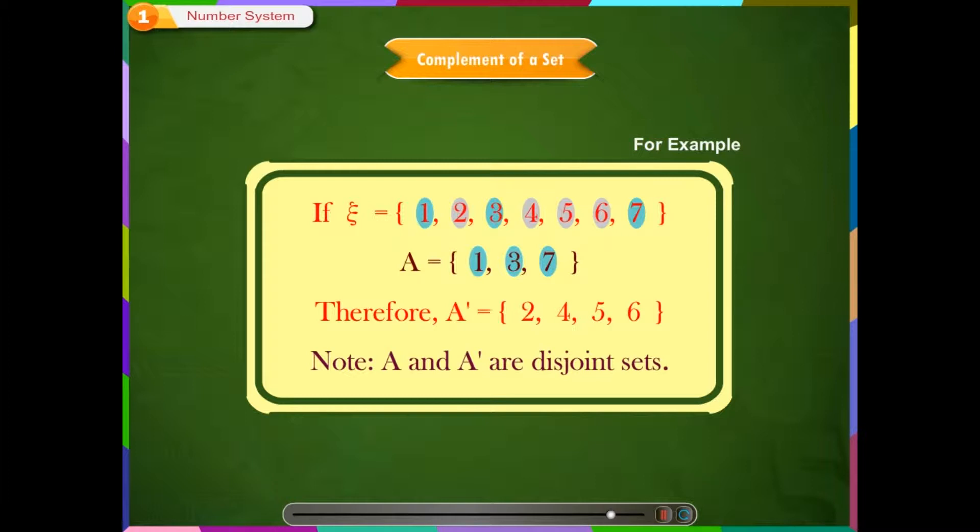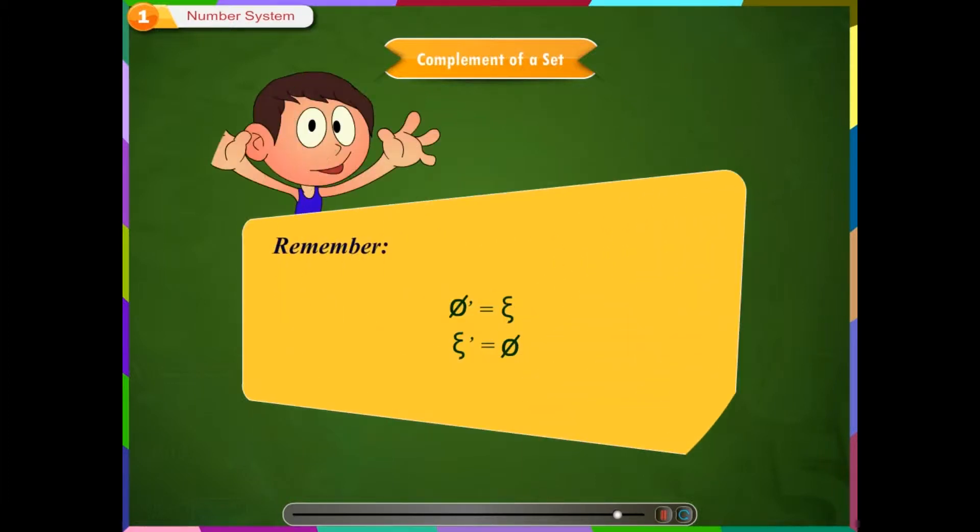Note that A and A dash are disjoint sets. Remember, the complement of the empty set φ is the universal set ξ, and the complement of the universal set ξ is the empty set φ.